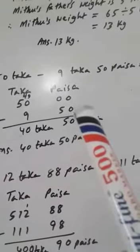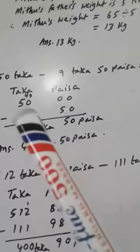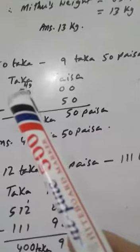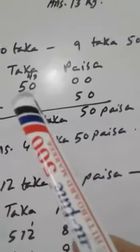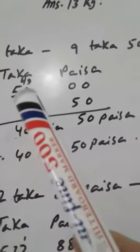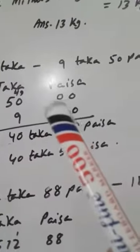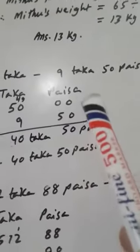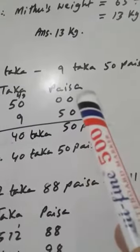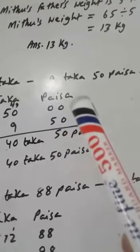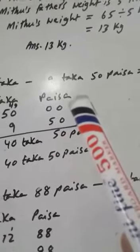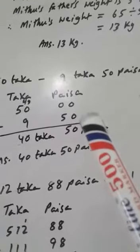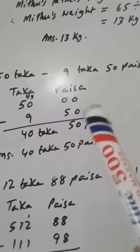50 cannot be subtracted from 0, so we have to borrow 1 from 50 — here it becomes 49, and if we borrow 1 here it becomes 100. Since 1 taka equals 100 paisha, here will be 100 paisha. From 100 paisha we have to subtract 50 paisha.